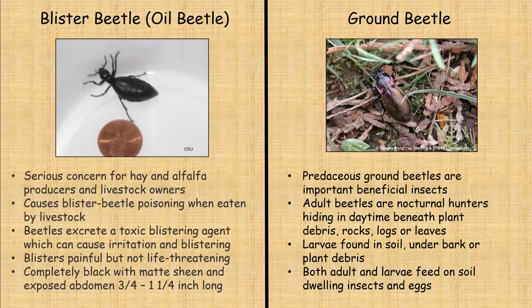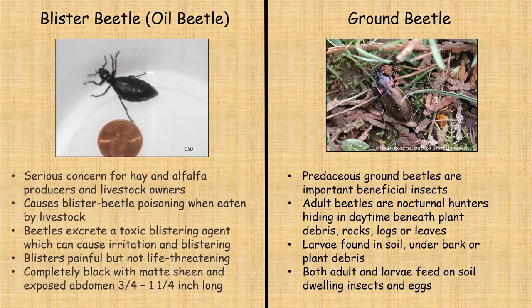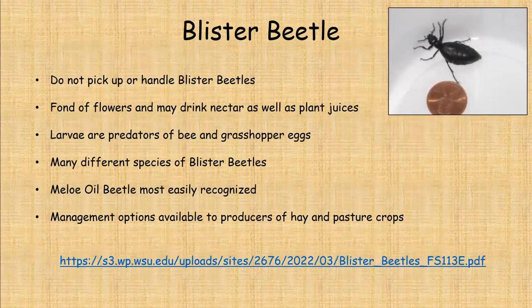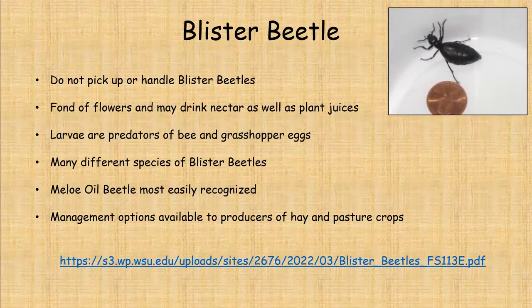The good guys are the ground beetles — predaceous beetles that are very important and beneficial insects. The adult beetles are nocturnal hunters and hide during the day. If you uncover a plant, push over a rock, or move some leaves, you'll likely find one of these underneath. Their larvae are down in the soil, under bark, or under plant debris. Both adult and larvae feed on soil-dwelling insects and eggs and are very good at eating slug eggs, so you definitely want to keep ground beetles around. If you see a blister beetle, definitely don't pick it up with your bare hands — use gloves.